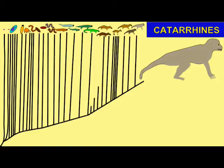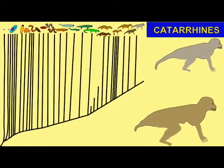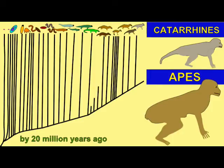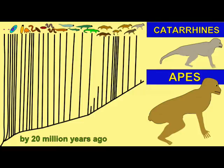Do you consider yourself an ape? Since the first members of the human family tree evolved from apes, we are just as much descended from those ancestral apes as the apes alive today. If you do not consider yourself an ape, then you are using the term ape as a paraphyletic group, which includes some, but not all, of the descendants of the first apes.